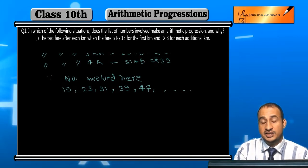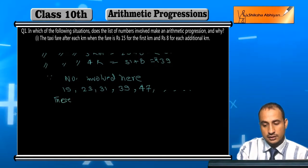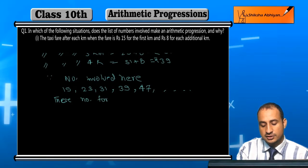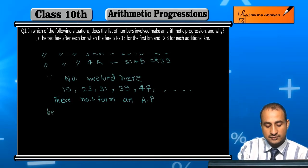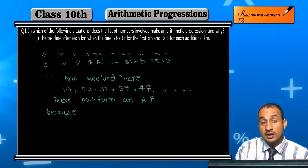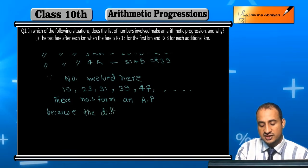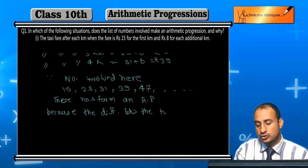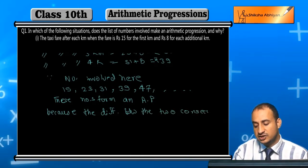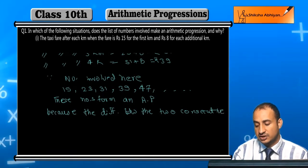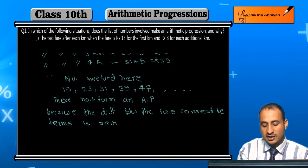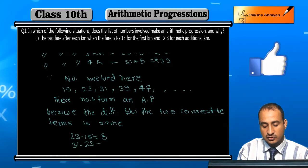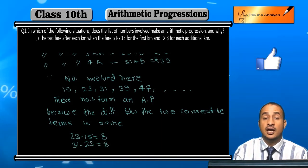These numbers form an AP — an arithmetic progression — because the difference between consecutive terms is the same. As you can see: 23 minus 15 is 8, 31 minus 23 is 8, and so on. The common difference is 8, so this forms an AP.